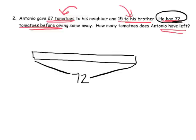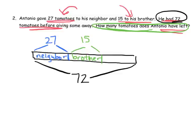And then, we're told that he gives 27 tomatoes to his neighbor. So, I'm going to write in, neighbor. And then, we're told that he gives 15 to his brother. And I'm going to label that here, 15 to his brother. And then, the question is, how many tomatoes does Antonio have left? So, that's going to be this section right here. This is what he has left over.